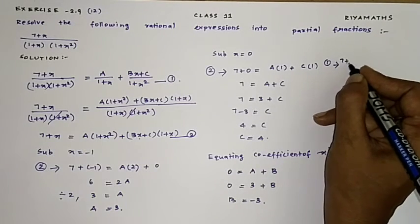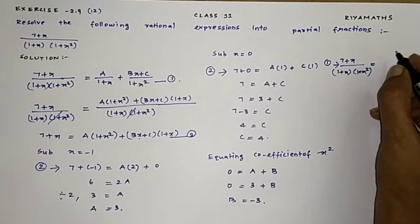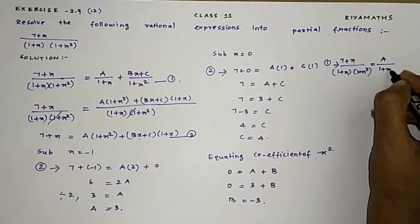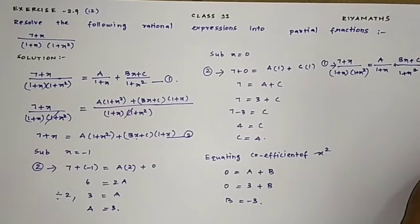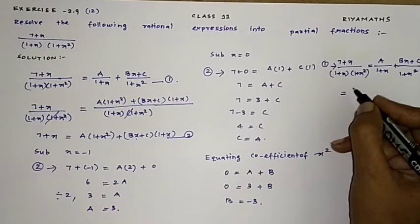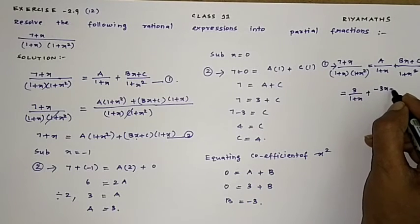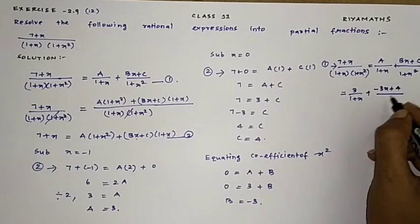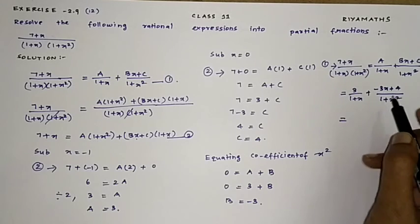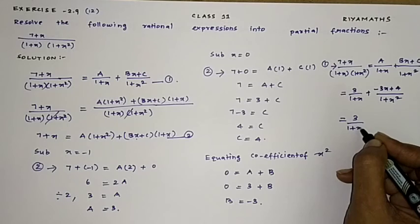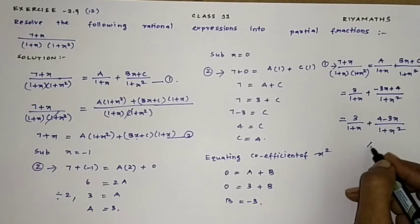Returning to equation 1: (7 + X) by (1 + X)(1 + X²) equals A divided by 1 + X plus (BX + C) divided by 1 + X². Substituting A = 3, B = -3, and C = 4: 3 by 1 + X plus (-3X + 4) divided by 1 + X², which equals 3 by 1 + X plus (4 - 3X) divided by 1 + X². This is our answer.